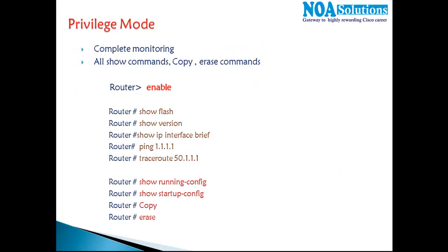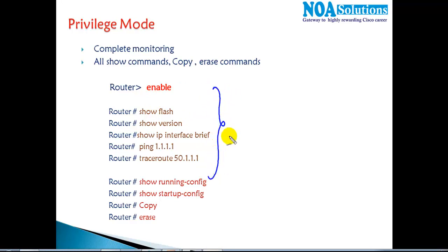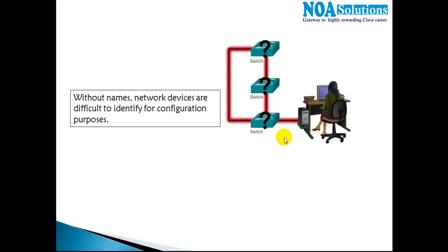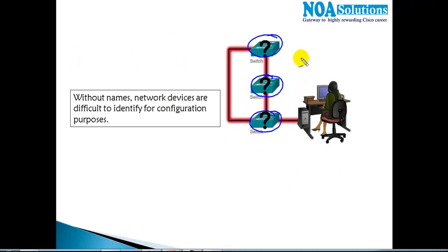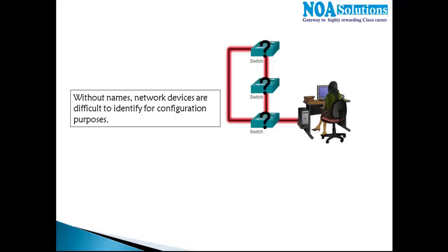Before we proceed, let me discuss the modes we've seen previously: user mode, privilege mode, and setup mode. We cannot make any changes in these modes. If I want to make any changes, I need to get into the next mode — the global configuration mode. For example, in a network with multiple devices, whether switches or routers, the default name for every device will be either 'switch' or 'router'.